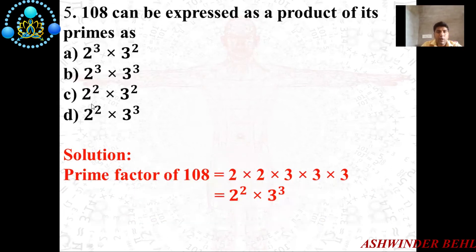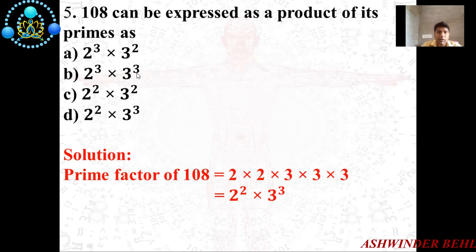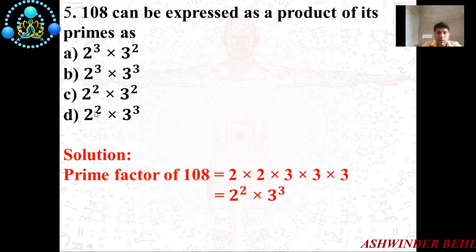Now the fifth question: 108 can be expressed as a product of its prime factors as? There are four options: 2³ × 3², 2³ × 3³, 2² × 2², and 2² × 3³. The prime factorization of 108 is 2 × 2 × 3 × 3 × 3. Two appears 2 times and three appears 3 times, so 108 = 2² × 3³. D is the correct option.